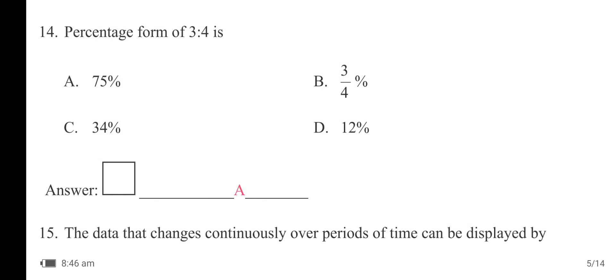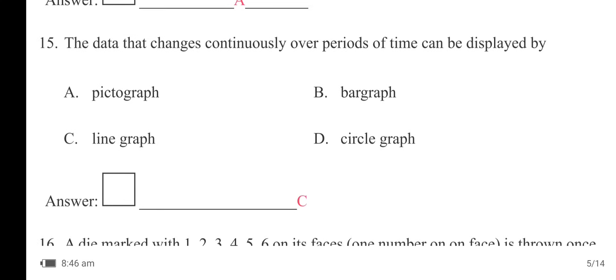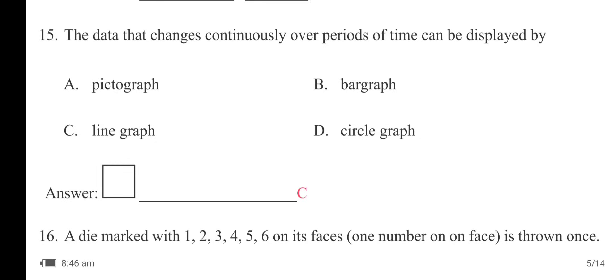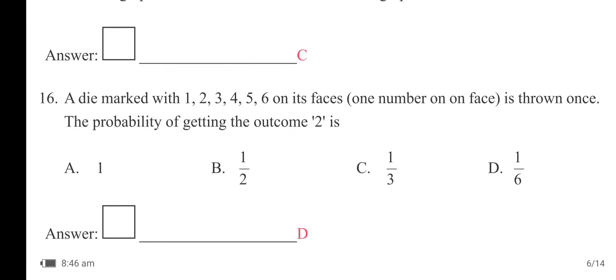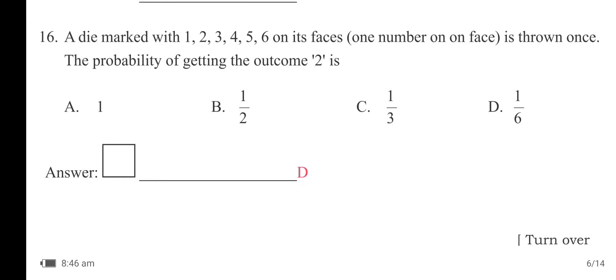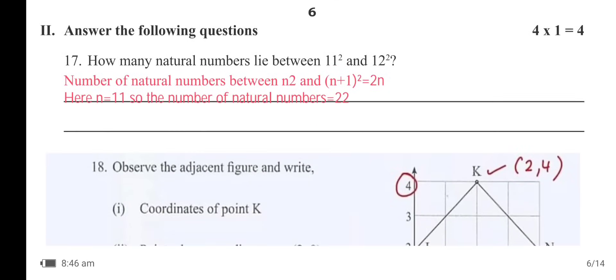The percentage form of 3:4 is option A — 75%. The data that changes continuously over periods of time can be displayed by option C — a line graph. A die marked 1 to 6 is thrown once; the probability of getting the outcome 2 is option D — 1/6.